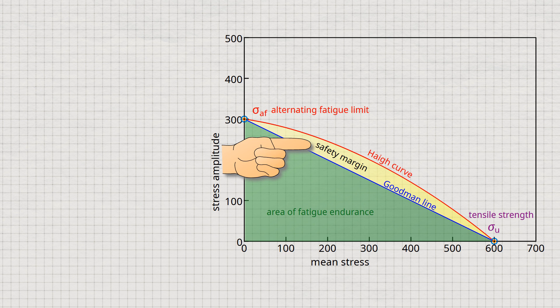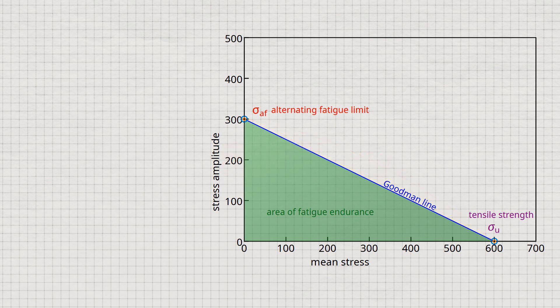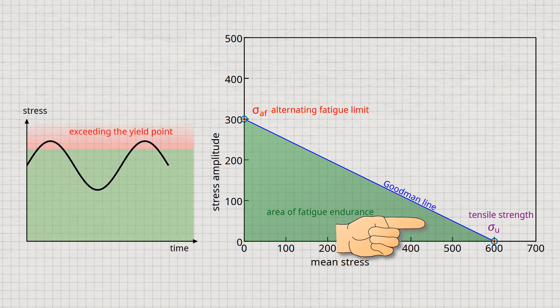The stress amplitudes resulting from the Goodman line are thus somewhat smaller than those that can actually be tolerated. However, especially at high mean stresses, the Goodman line is only of theoretical relevance, since in this range the yield point is already exceeded, resulting in impermissible plastic deformation. Note that the fatigue test is always carried out until the sample breaks and not until plastic deformation occurs.